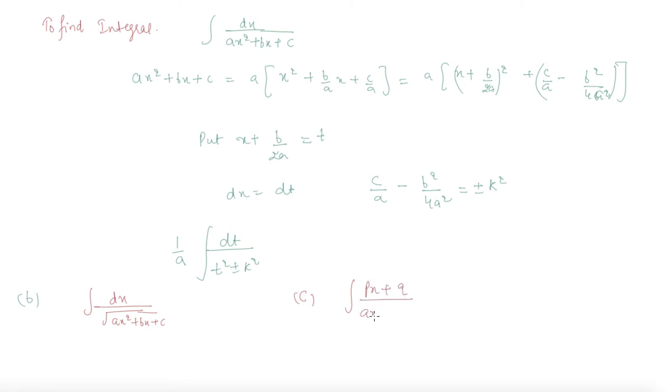And similarly for other types, like type C is px plus q over ax square plus bx plus c, where p, q, a, b, c are constants. Now we can split px plus q equals to a times d by dx of ax square plus bx plus c plus some constant b. So which is 2ax plus b plus some other constant. We need to find out the value of these constants and we will put the value of px plus q in these terms. So it will now become easier for us.